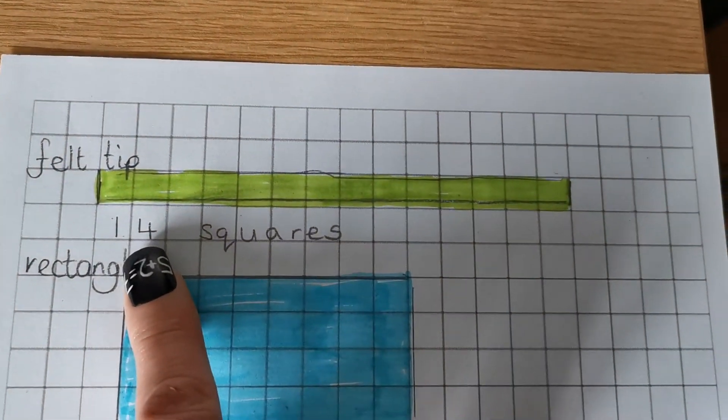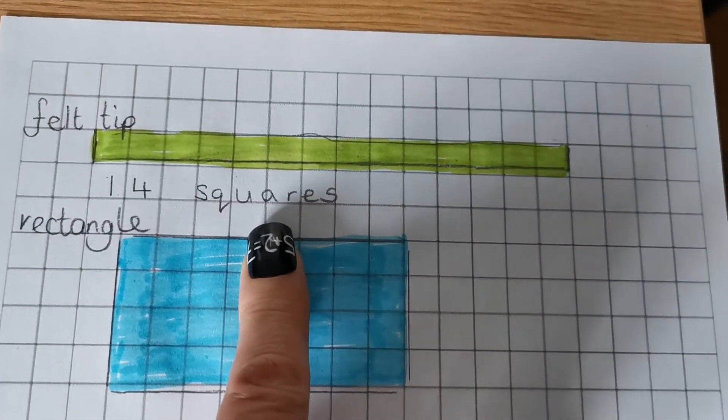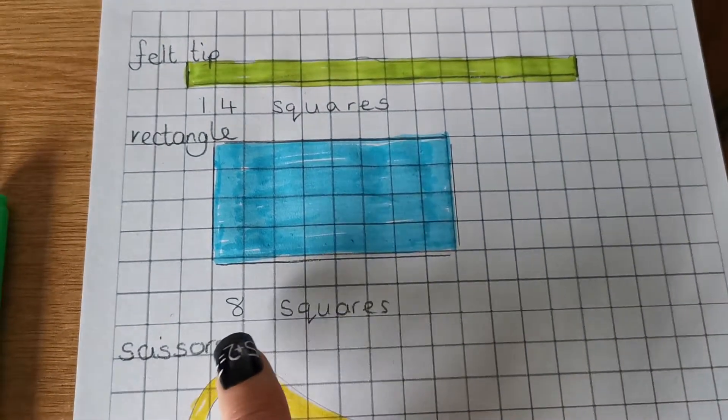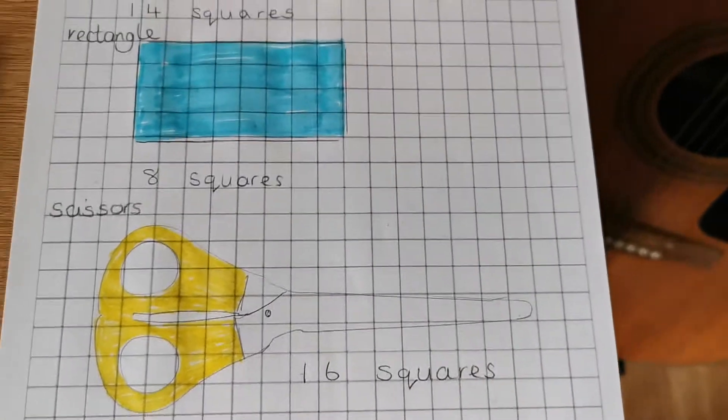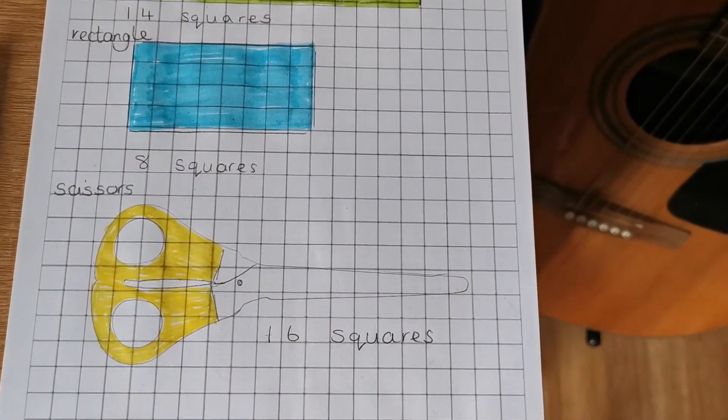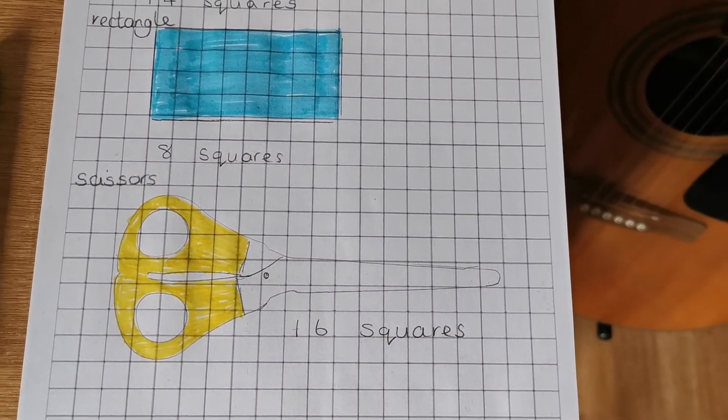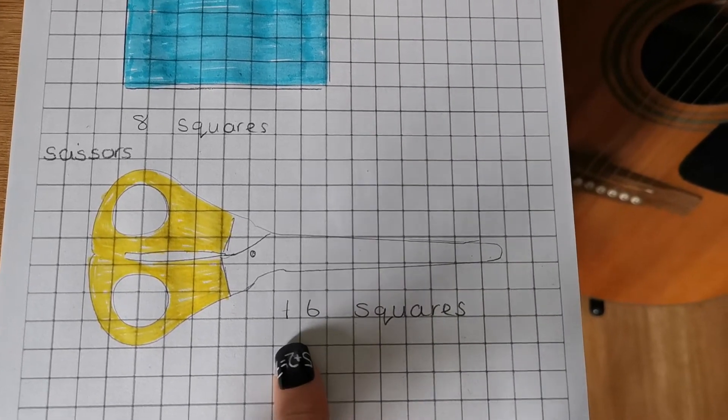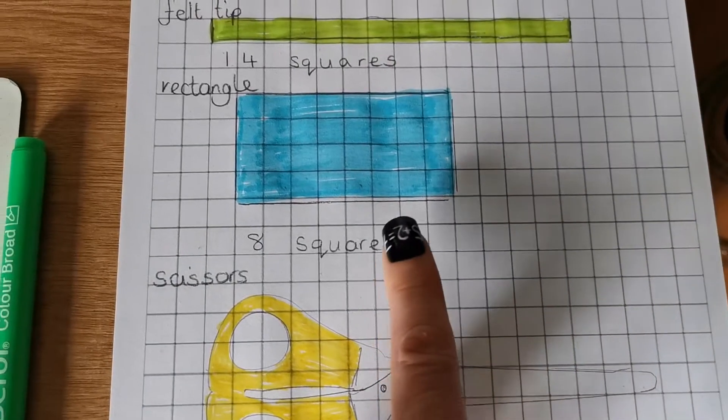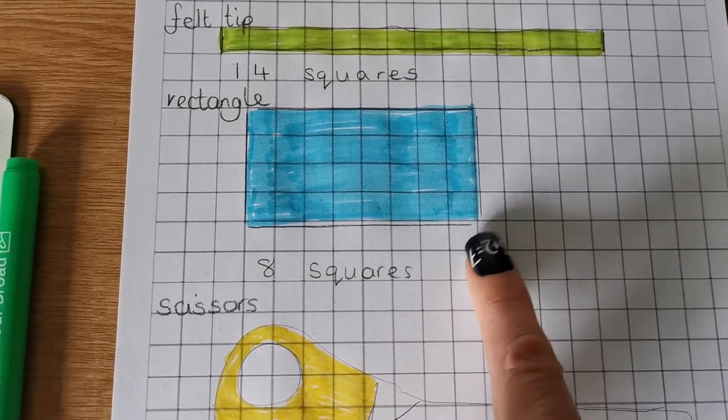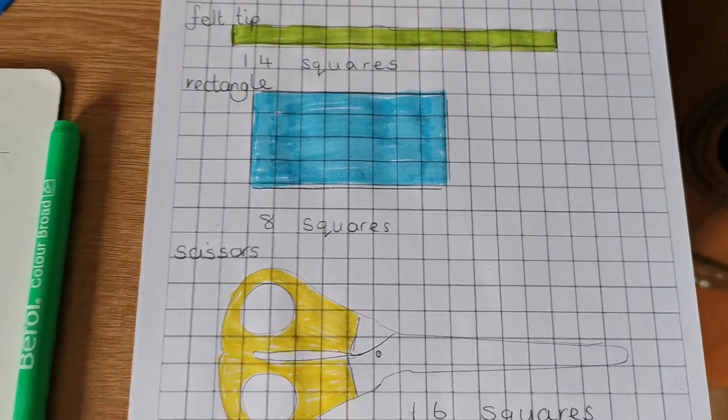which one of the things you've measured was the longest and which one was the shortest. So I'm looking at the felt tip. The felt tip was fourteen squares in length. The rectangle was eight squares and the scissors were sixteen squares. So out of the three things that I measured, the scissors were the longest at sixteen squares. And the rectangle was the shortest at eight squares.